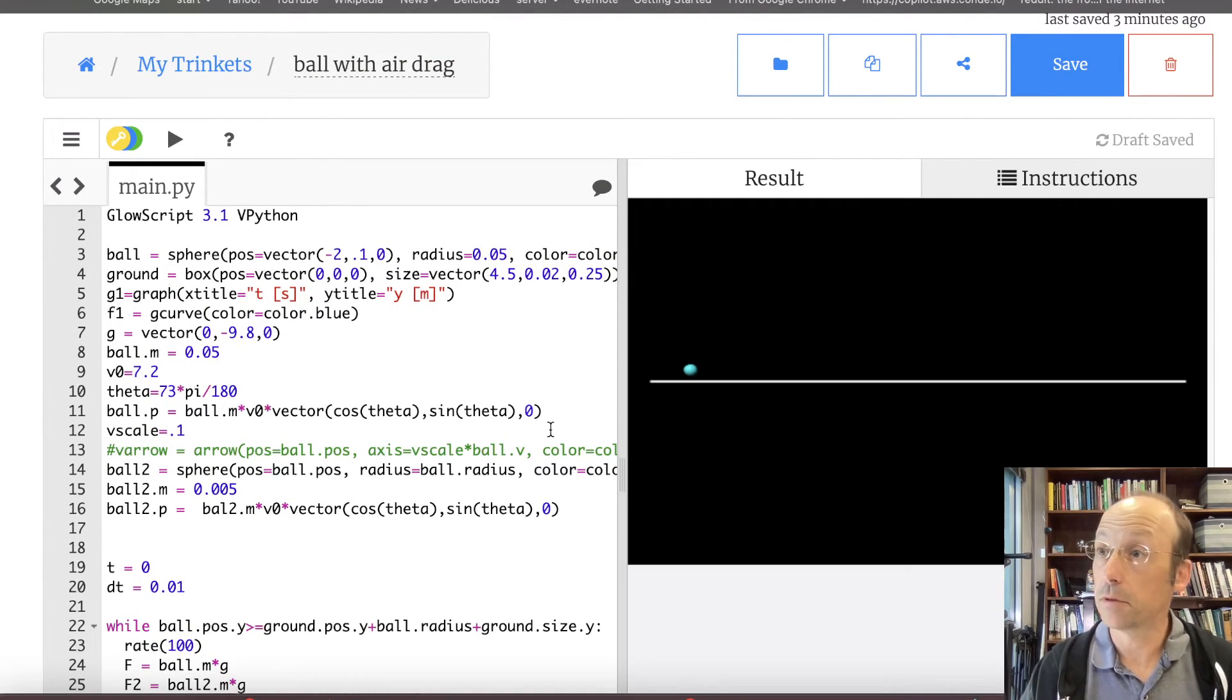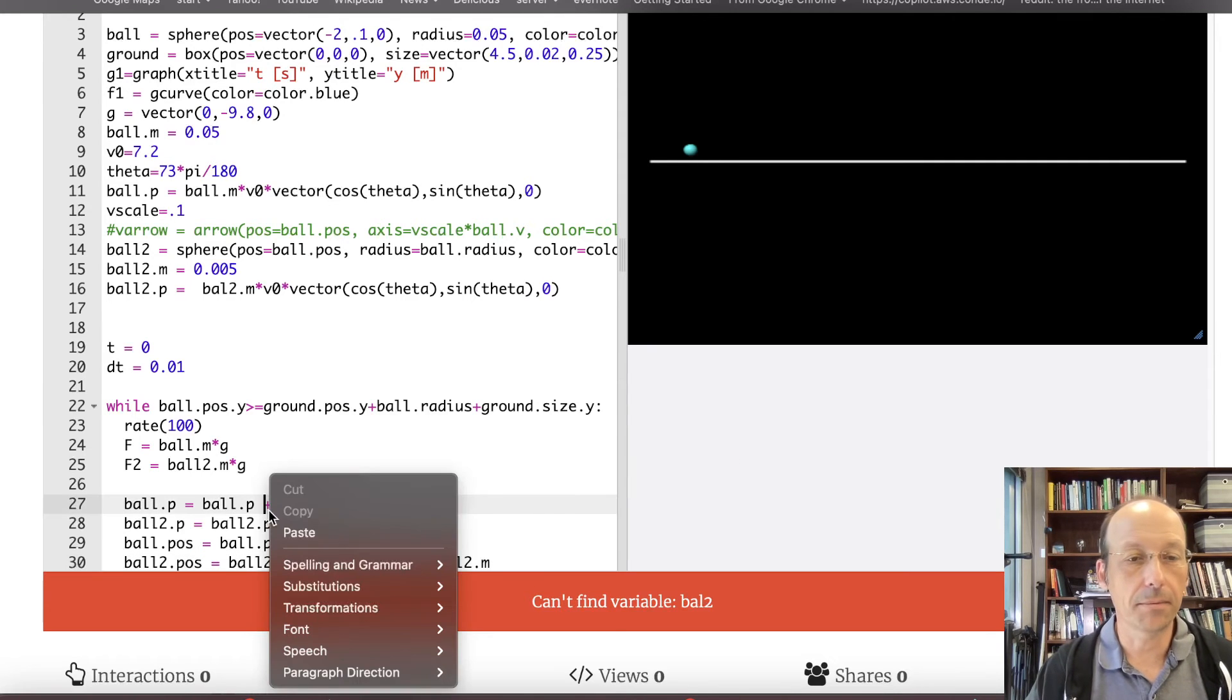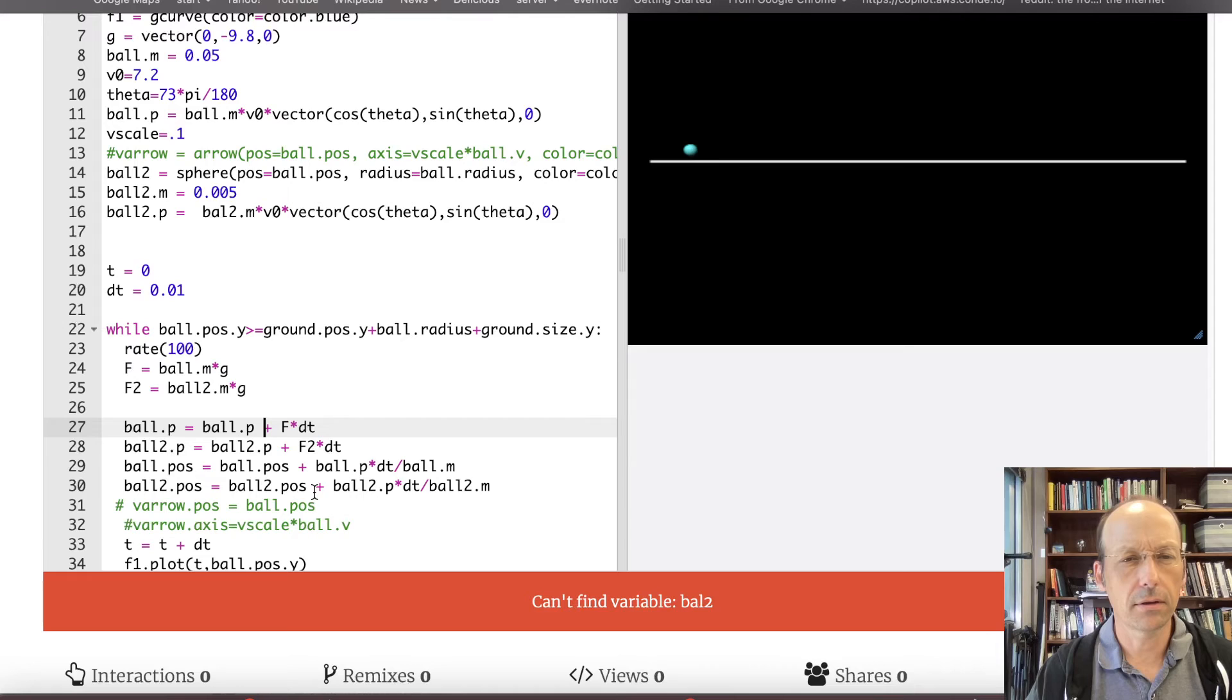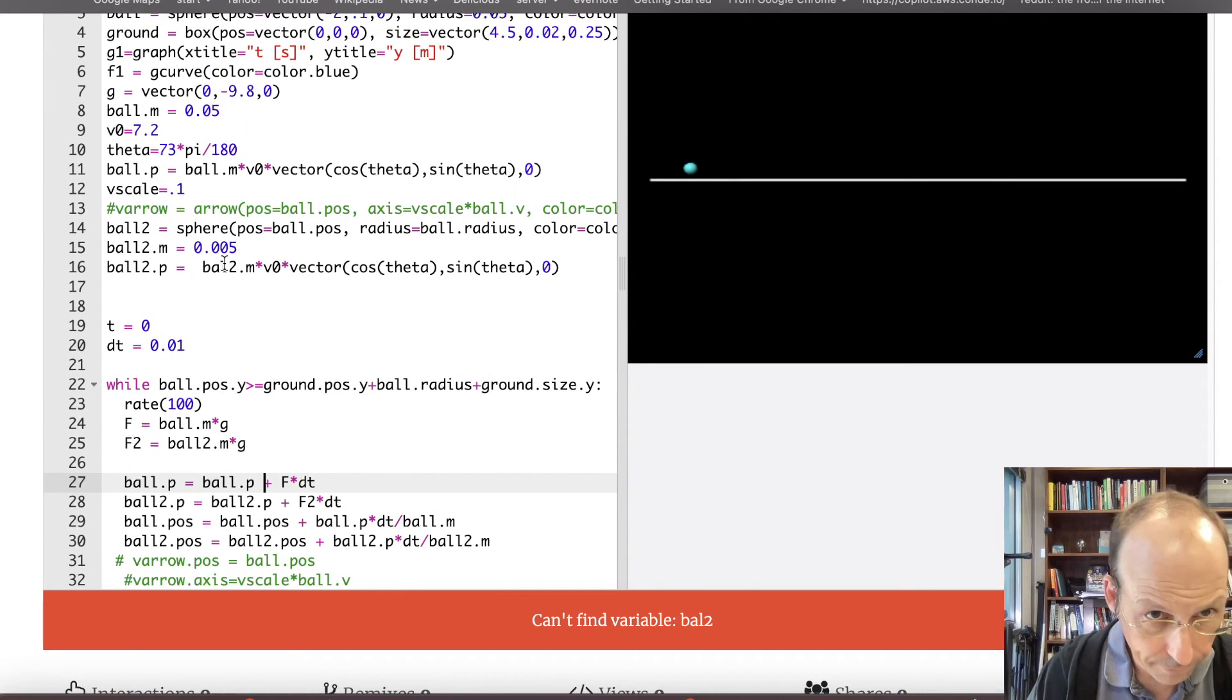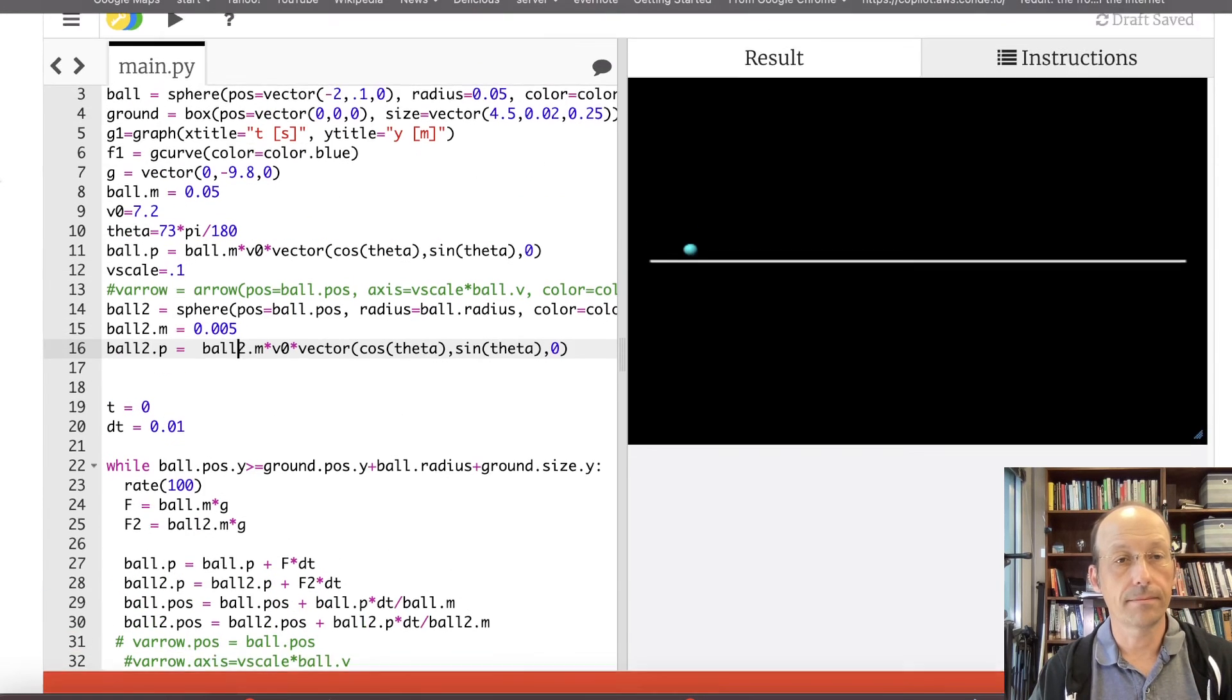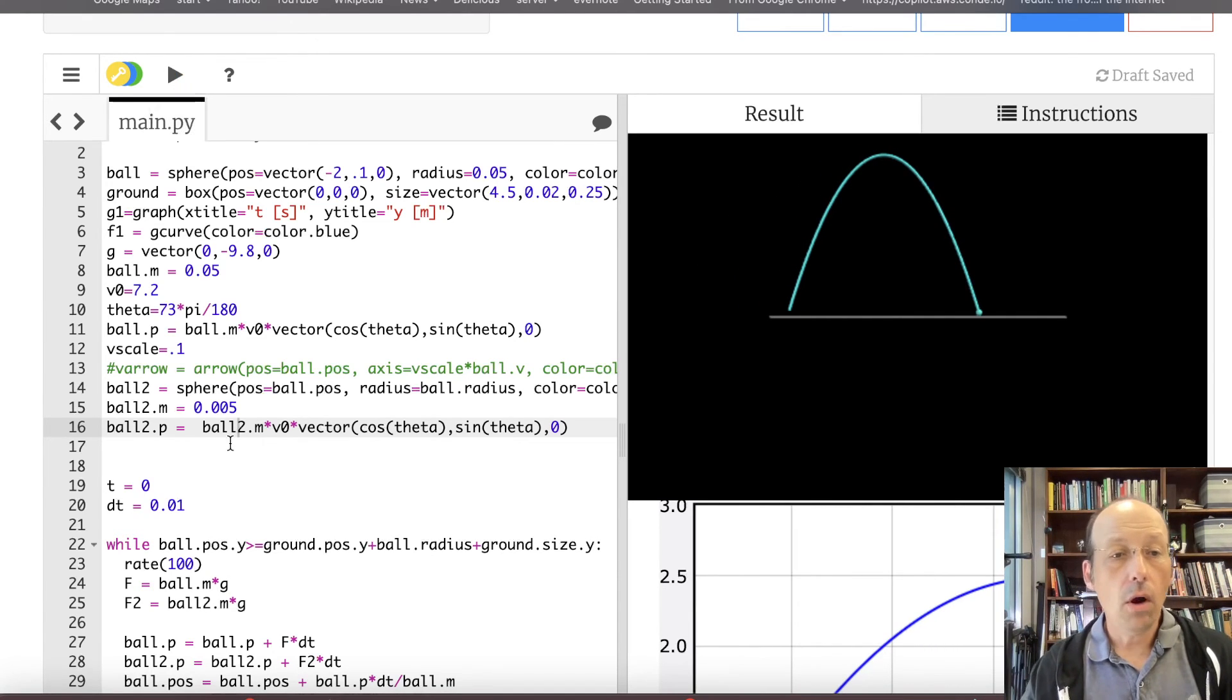Let's see, so these should be two balls right on top of each other with nothing exciting happening. And something exciting happened, it didn't run. Can't find ball2 because I can't type. So where is ball2? Where did I type that wrong? Ball2, ball2, ball2. Where is ball2? B-A-L-2. Where did I get that? Oh, here it is. Okay, run. So it's two balls on top of each other.